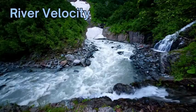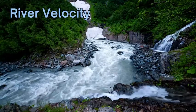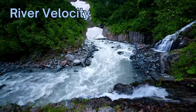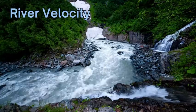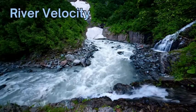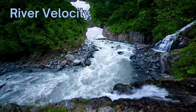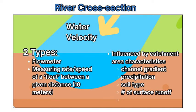The first step to calculate discharge of a river is to calculate the velocity or speed of the flowing water within the river. We can measure the speed or velocity of the river using two main types.